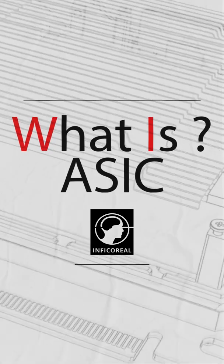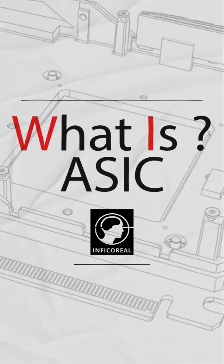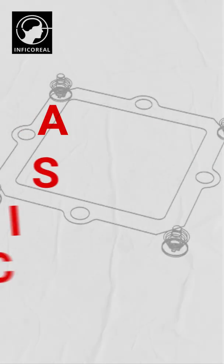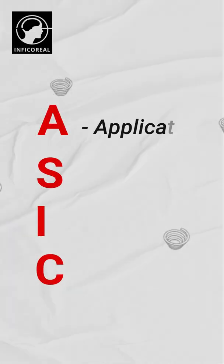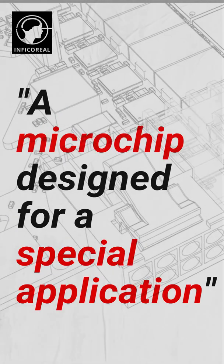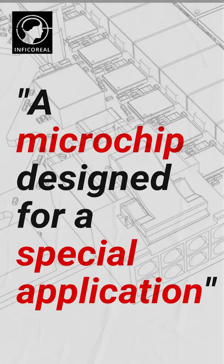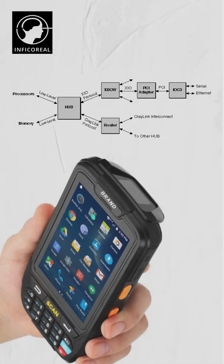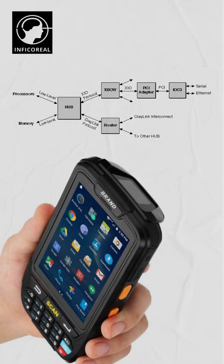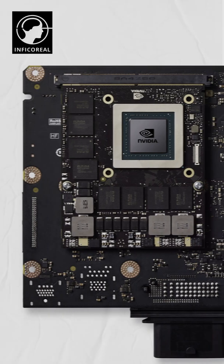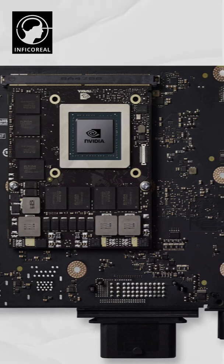What is an ASIC and why is everyone using them? ASIC, or application specific integrated circuit, is a microchip designed for a special application such as a kind of transmission protocol or a handheld computer. ASICs are designed specifically for one client to provide a function required by the client's end product.